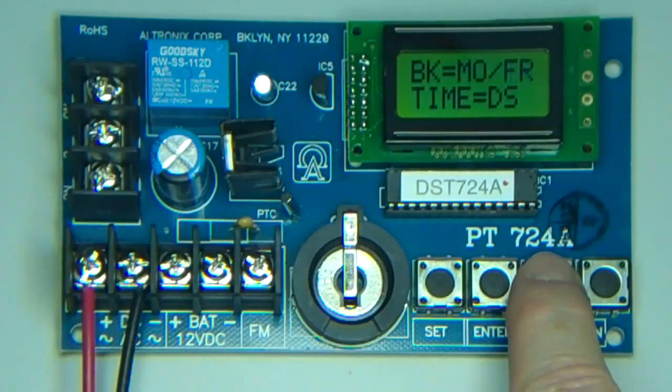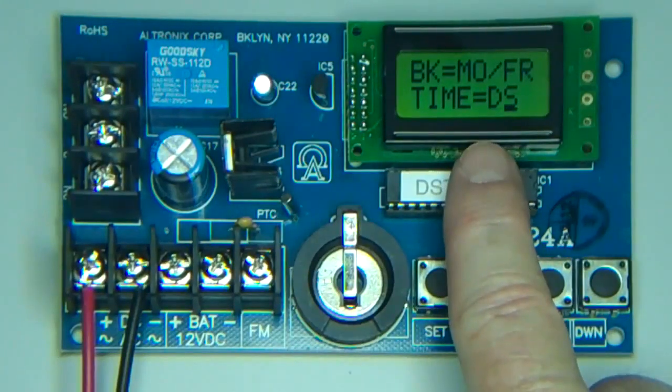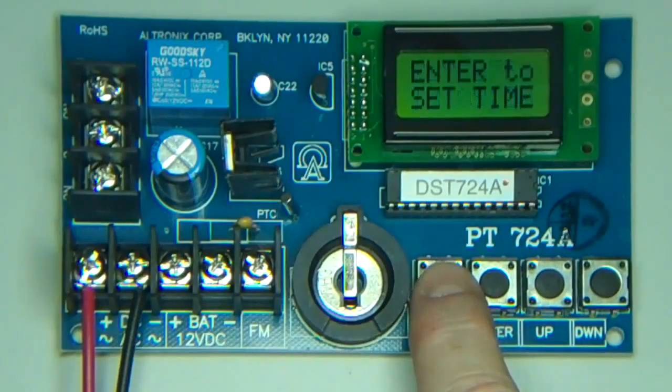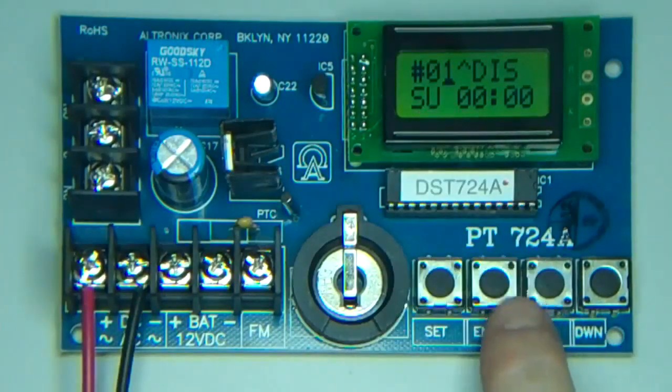The DS indicates daylight savings time, and you can change that if necessary. Here you will see the relay says off. Next, we're going to set the event. Press the set button twice, press enter. The one indicated here is the position of the first event. We're going to change that to on.